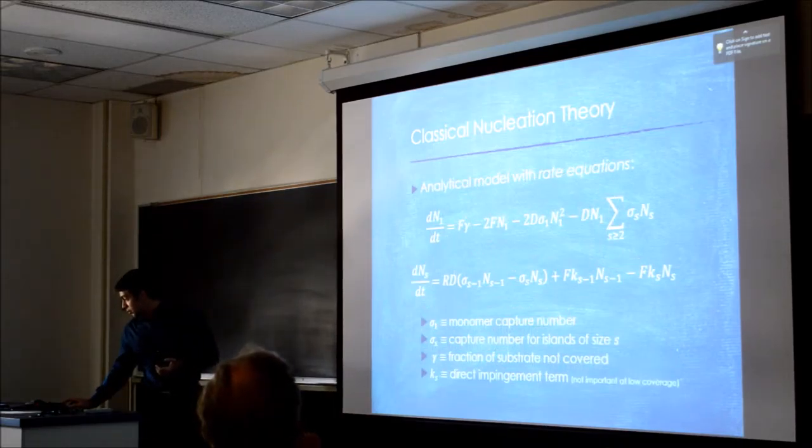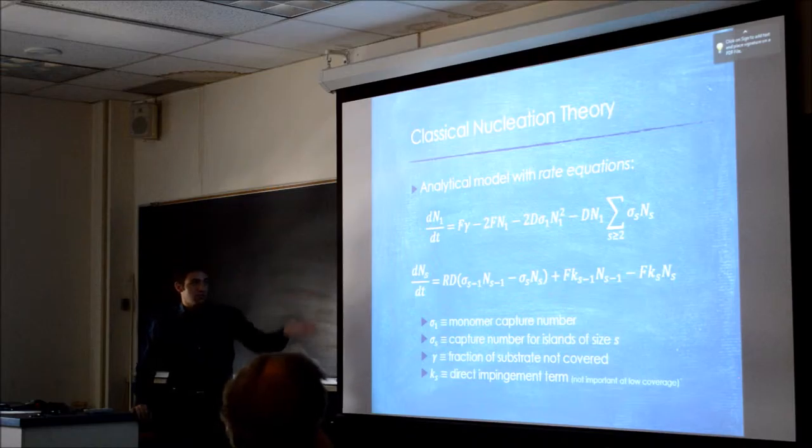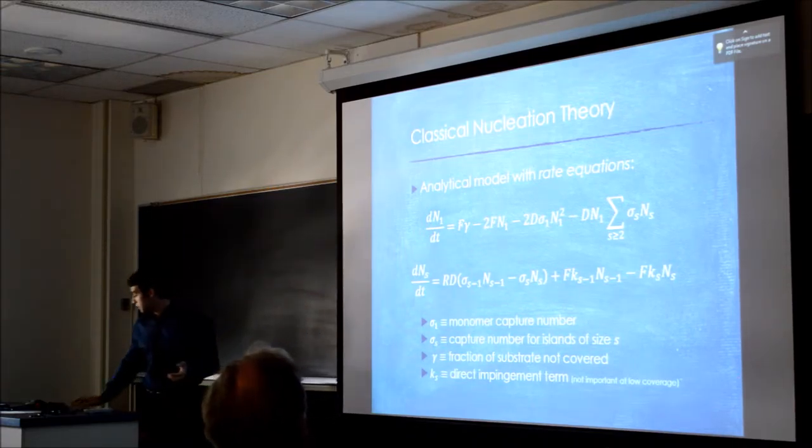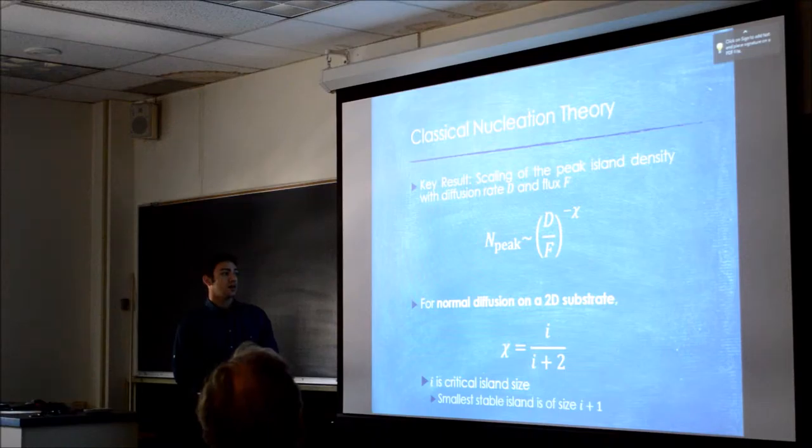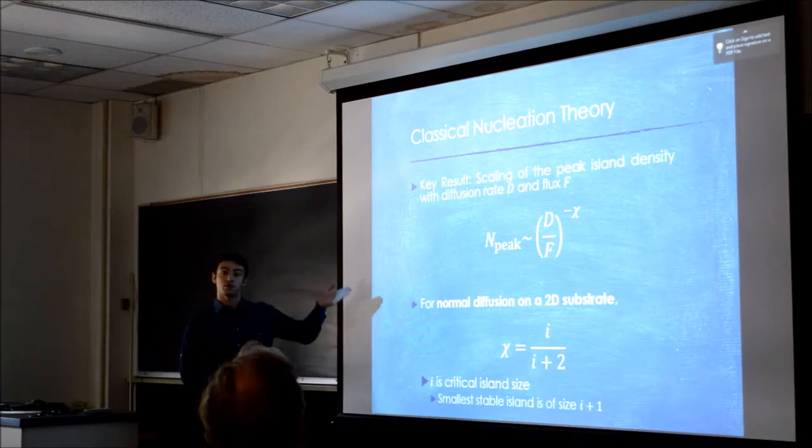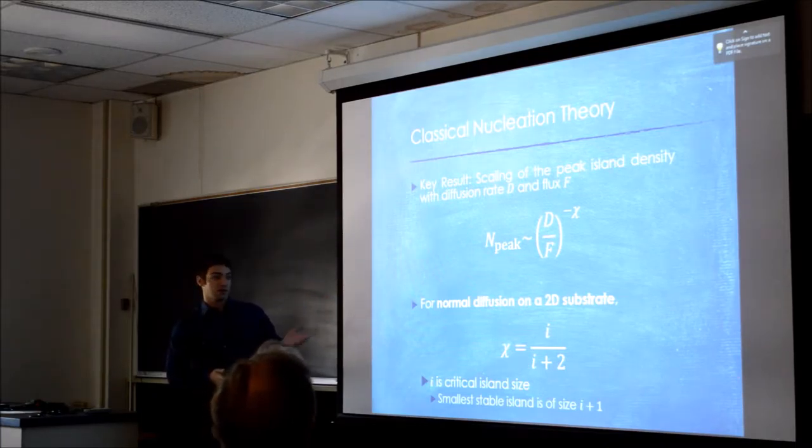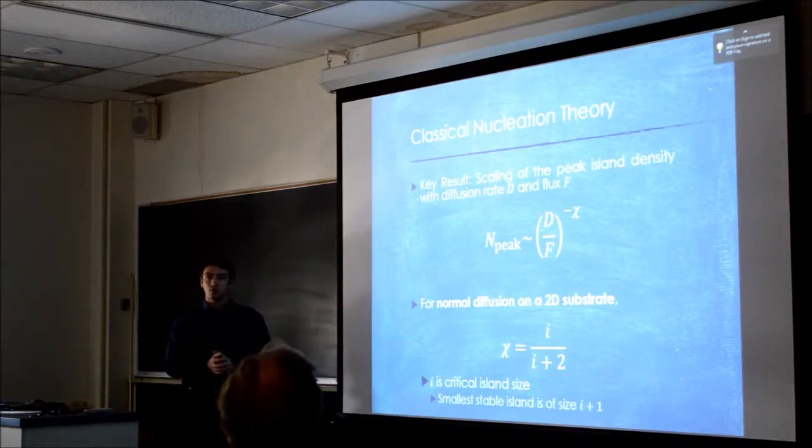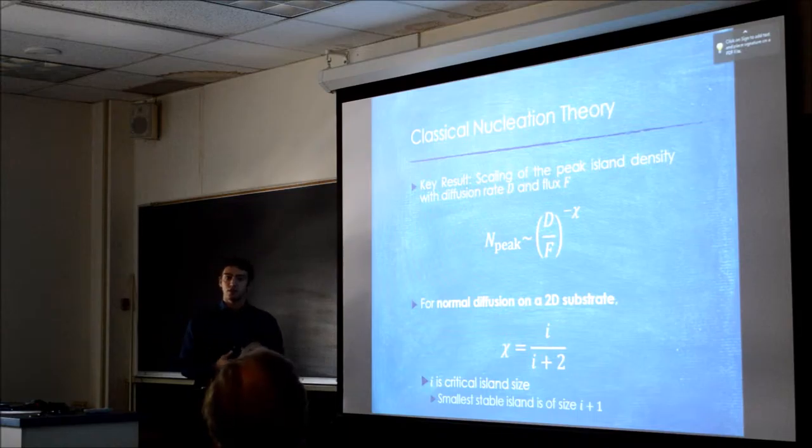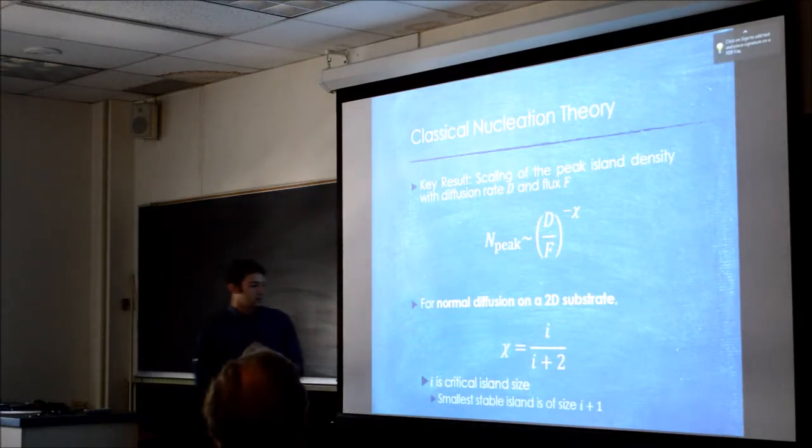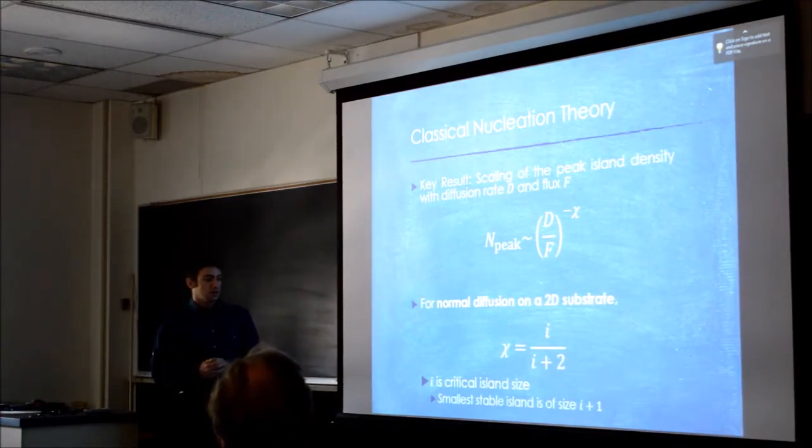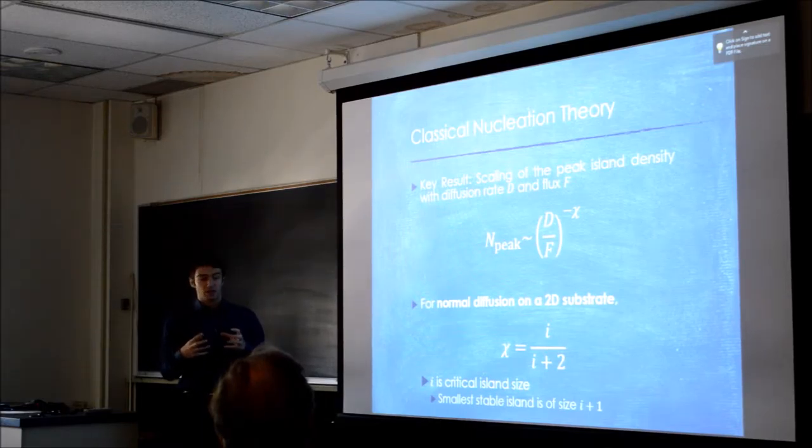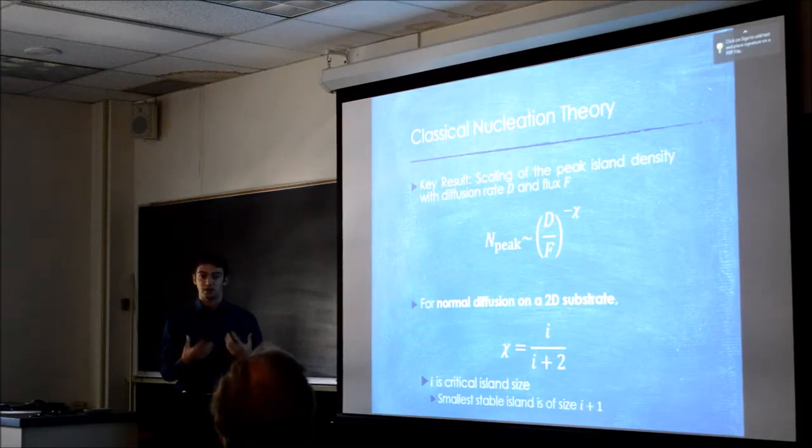The program of doing this sort of thing theoretically is to solve these guys for variables that are particularly interesting. Perhaps the key result is what's called the peak island density scaling. What comes out is that we find that the peak island density scales as D over F, diffusion rate over deposition flux, to the power minus chi. This chi is kind of a key variable that we're looking at. In the classical picture, the classical nucleation picture, it comes out to be i over i plus 2. Here i is the critical island size. That is to say, something, a cluster which has a size of i plus 1, is stable and no longer moves around. We call that a stable island.